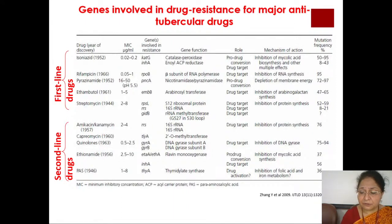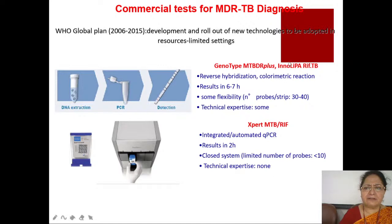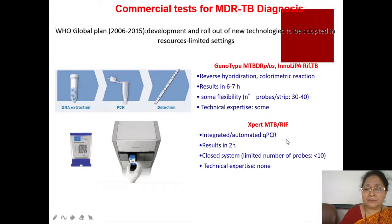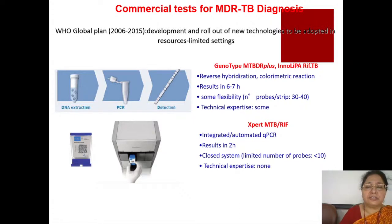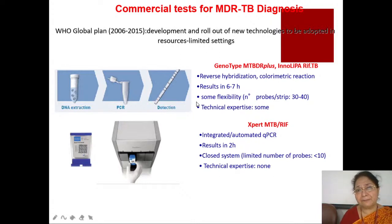Commercial tests available for MDR-TB detection include: the Genotype MTBDRplus assay, which uses DNA extraction followed by PCR followed by hybridization on a nitrocellulose membrane. The GeneXpert MTB/RIF cartridge is widely used and detects rifampicin resistance; the newer XDR cartridge detects both first-line and second-line drug resistance. The line probe assay — commercially available as GenoLEPA — can detect resistance to both INH and rifampicin, as well as quinolones and second-line injectables.